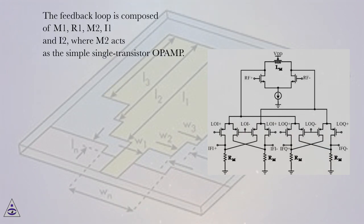The feedback loop is composed of M1, R1, M2, I1 and I2, where M2 acts as the simple single transistor op-amp.